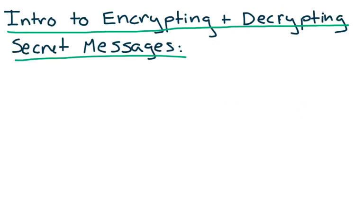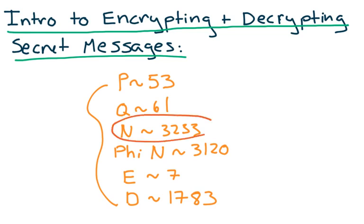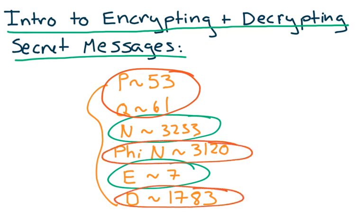So today we're going to talk about how the values that we've generated in the last two videos are going to be used to encrypt and decrypt secret messages. We're going to have to keep the roles of the key generator and the sender especially in mind. The key generator is the one who has generated all six of these values. He'll release the values of n and e to the general public including the sender, but he'll keep the values of p, q, phi(n), and d private to himself.